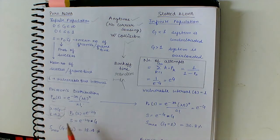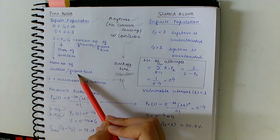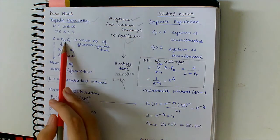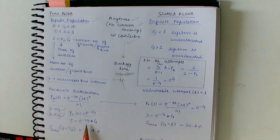Then S, that is the mean number of successes per frame time, is given as P0(2) times G, which is e to the power minus 2G times G.